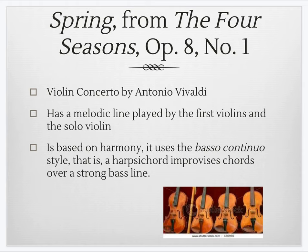Probably the most famous piece Vivaldi wrote is 'Spring' from his series of four concertos for violin called The Four Seasons, from his Opus 8. The Four Seasons got their name because he used a couple of poems for each season as reference when he wrote the work. The melodic line is played by a solo violin and the first violins. The solo violin joins the first violins in the Ritornello section, then pops out to play by itself. It's based on harmony and uses basso continuo — harpsichord and strong bass line — where the harpsichord improvises the chords.